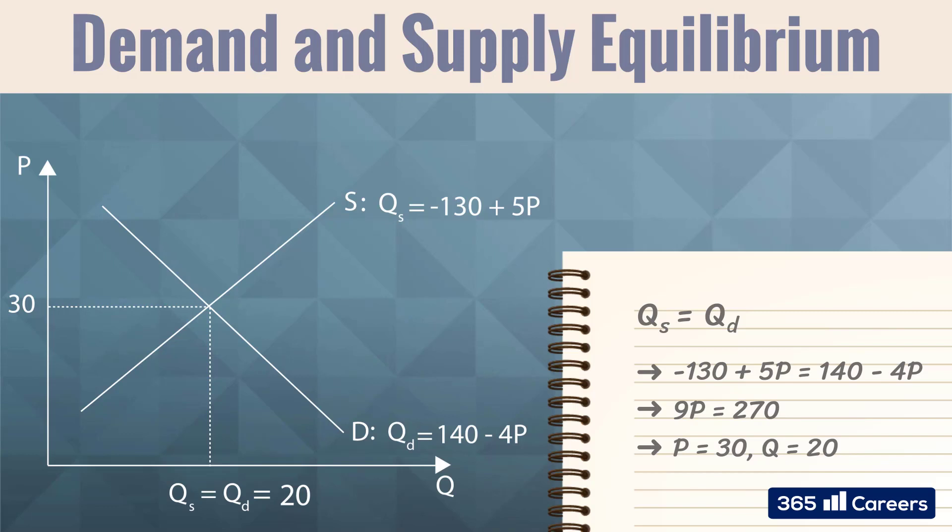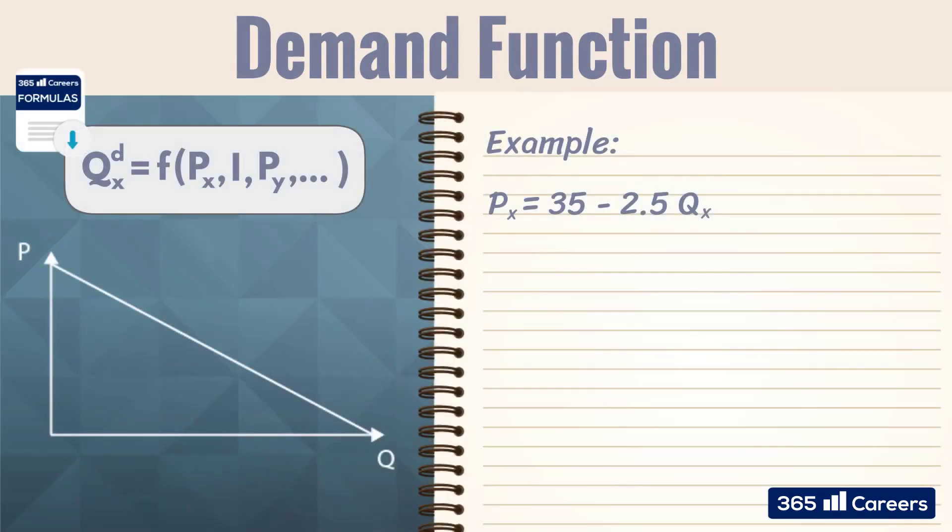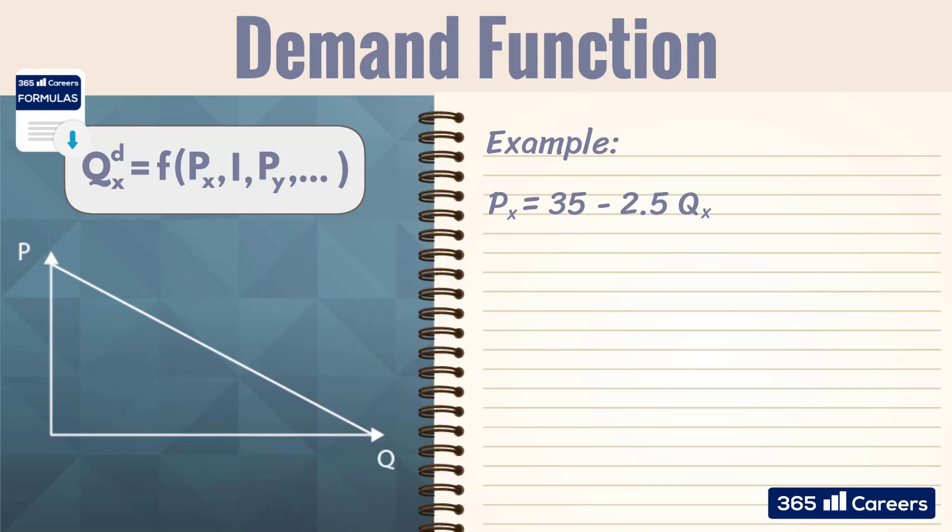We need to know that every demand and supply function has a slope. Let's get back to the demand function we introduced earlier. Its steepness, or slope, represents how much one of the variables needs to change for the other one to change too. It equals the absolute change in price over the absolute change in quantity.